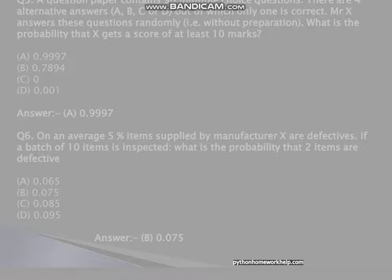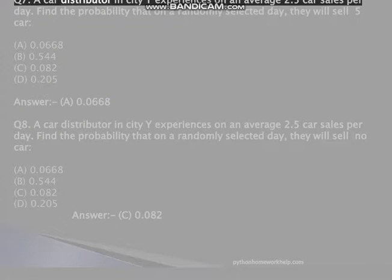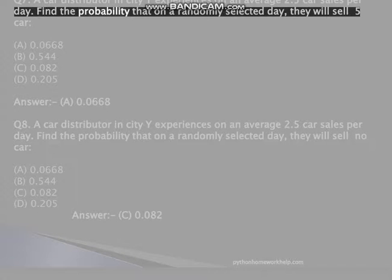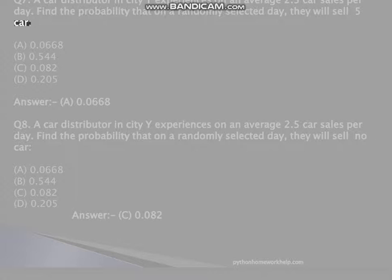Pythonhomeworkhelp.com. Q7. A car distributor in City Y experiences on an average 2.5 car sales per day. Find the probability that on a randomly selected day, they will sell 5 car. A, 0.0668, B, 0.544, C, 0.082, D, 0.205. Answer: A, 0.0668.